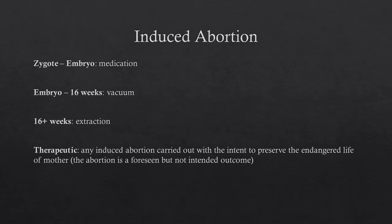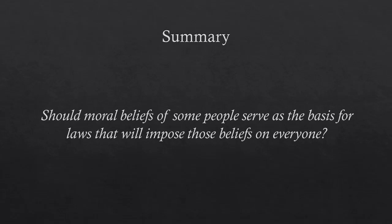A great summary of the issue is presented by our textbook authors: 'Should moral beliefs of some people serve as the basis for laws that will impose those beliefs on everyone?' We can add: on what ground should the beliefs of group A be taken as the standard rather than those of group B? On pure numbers? On the moral rectitude of the claim? Moral according to whom, and according to which theory? And why should we be concerned with consequences rather than absolute claims to life, or vice versa? As you can see, this is messy and only about to get messier.